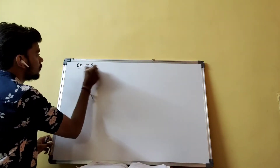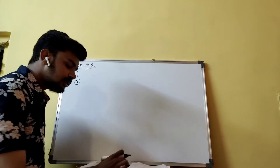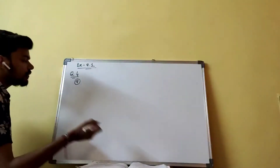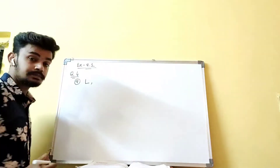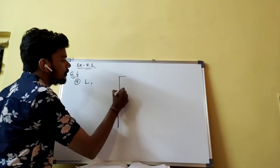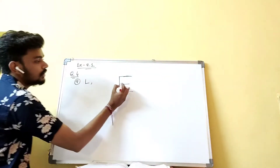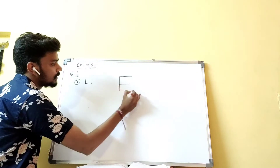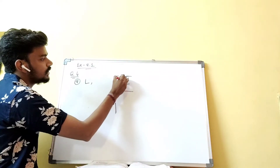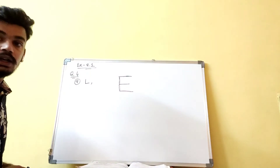Exercise 8.1, question number four, part (a). Let's start from the first letter. L - only L itself forms a perpendicular, so L is an answer. Next, E - if you draw it bigger, you can see it forms an L shape here, here, here, and here as well. So there are actually four perpendicular pairs in E, making E also an answer.